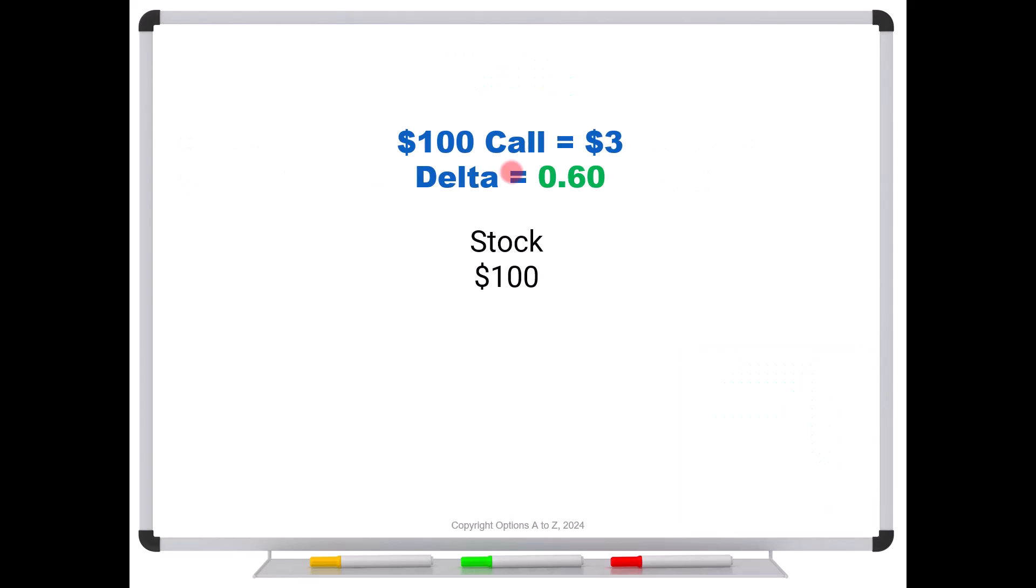So for example, let's say we have a $100 call trading for $3, and our brokers platform shows that the delta is 0.60.